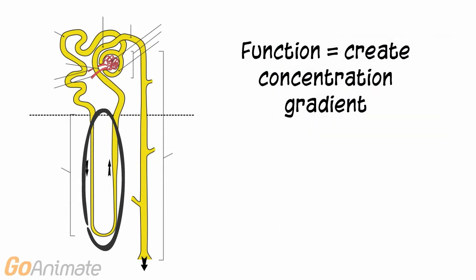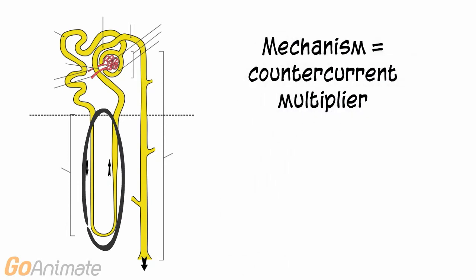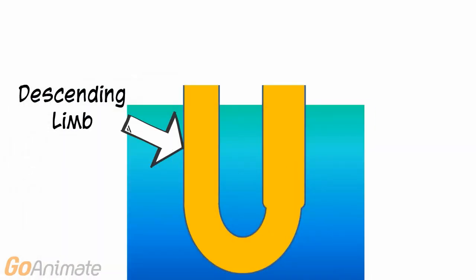The function of the Nephron Loop is to create a concentration gradient. This mechanism is called a counter-current multiplier. Let's take a closer look.